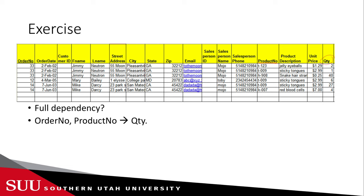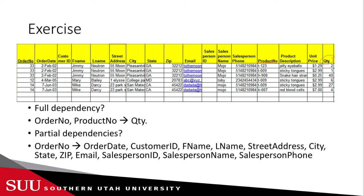Do we have any partial dependencies — where something relies on only part of the key? Yes. We have a partial dependency on order number: order number determines order date, customer ID, first name, last name, address, and all customer information, as well as the salesperson ID, name, and phone. We also have a partial dependency on product number: product number determines product description and unit price.